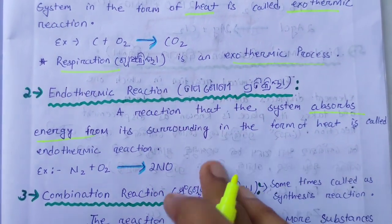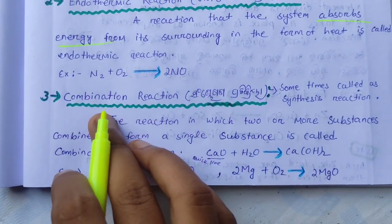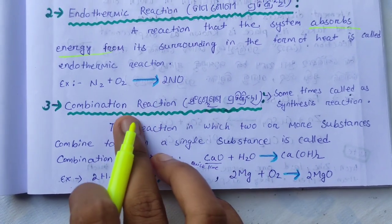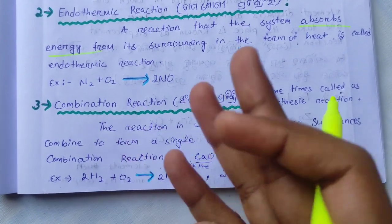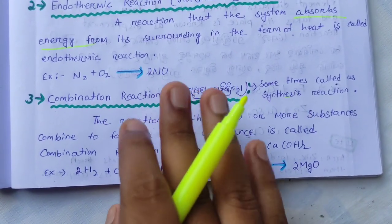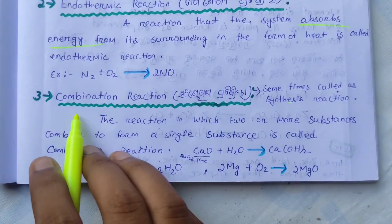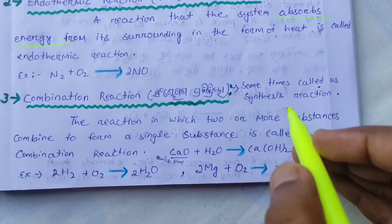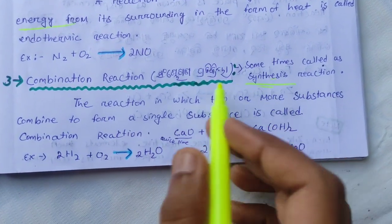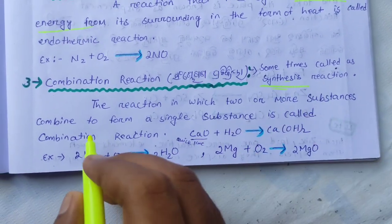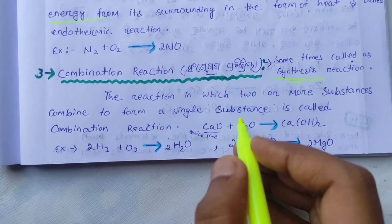The next reaction type is the combination reaction, also known as a synthesis reaction. The reaction in which two or more substances combine to form a single substance is called a combination reaction.